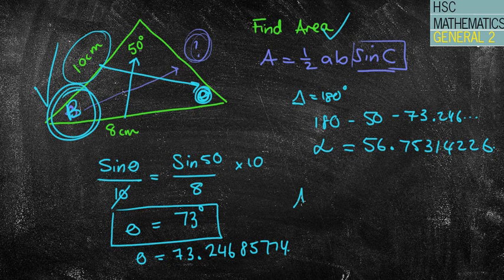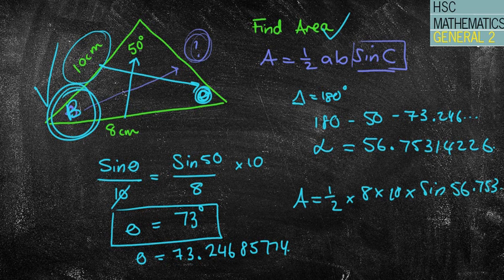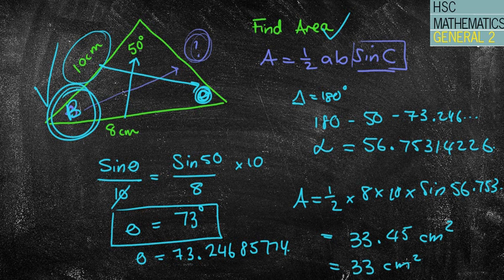I can now use the area rule. Area equals half times 8 times 10 times sine 56.753. I'm just going to use my answer key in my calculator. So half times 8 times 10 times sine of my answer key. I get an area of 33.45 centimeters squared which equals 33 centimeters squared to the nearest square centimeter.